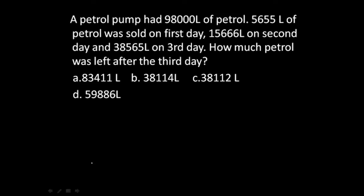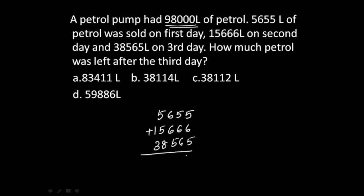Next question: A petrol pump had 98,000 liters of petrol. 5,655 liters were sold on the first day, 15,666 liters on the second day, and 38,565 on the third day. How much petrol was left after the third day? First find the total petrol sold by adding all three, then subtract from 98,000.